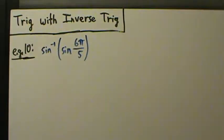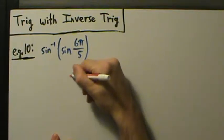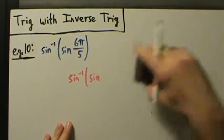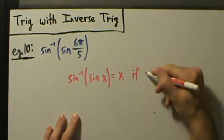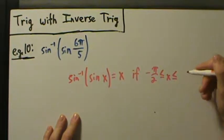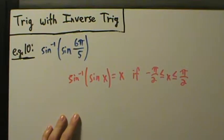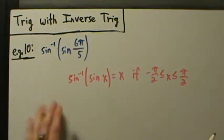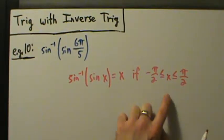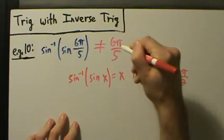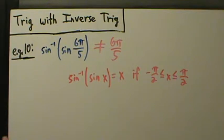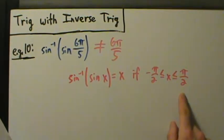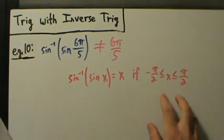Is it possible to cancel? The rule says that inverse sine of sine of x equals x if negative π over 2 is less than or equal to x is less than or equal to positive π over 2. But 6π over 5 does not satisfy this — 6π over 5 is not between negative π over 2 and positive π over 2. In fact, 6π over 5 is a little bit larger than π. So since it's not between negative π over 2 and π over 2, we cannot cancel. This does not equal 6π over 5.